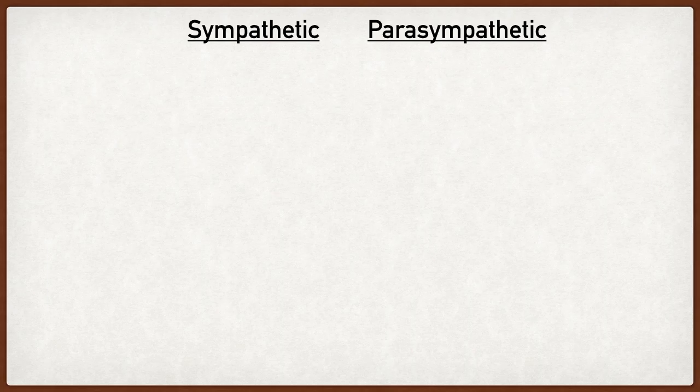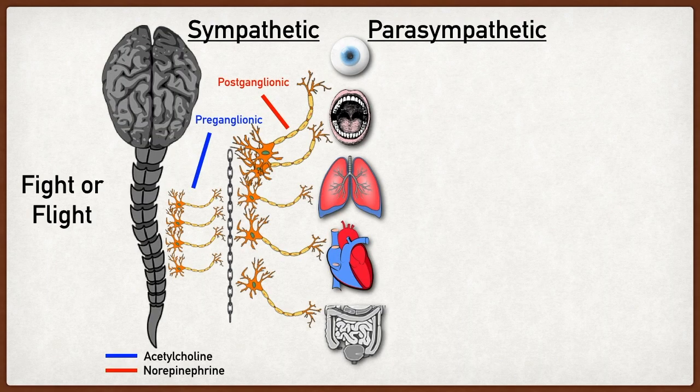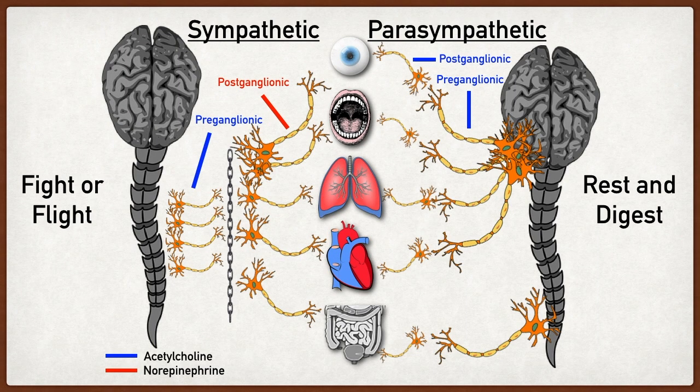So what are adrenergic receptors? In order to better understand this we're going to briefly talk about the sympathetic and parasympathetic nervous system. There's a previous EZMed video that talks about the autonomic nervous system in detail which I'll link above. In that video we talked about how the sympathetic nervous system is involved in generating the fight-or-flight response whereas the parasympathetic nervous system is involved in increasing activity related to rest and digest.